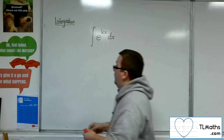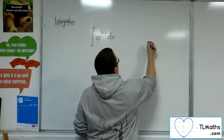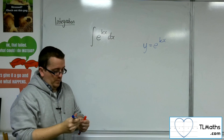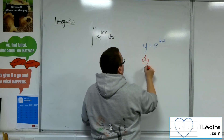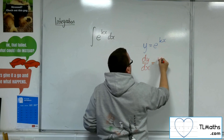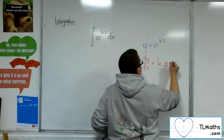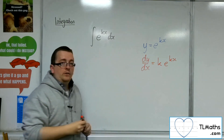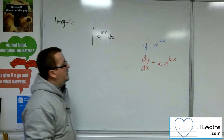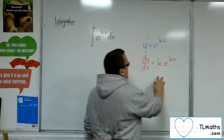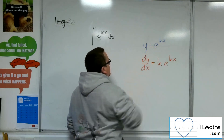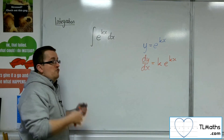Now we know that when we differentiate e to the kx, the coefficient of the x, the k, comes to the front and we just have e to the kx. That's a result from the chain rule for differentiation, and for AS maths this is a result that we need to be aware of.